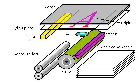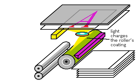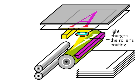When a document is placed in a copier, a bright light is bounced off the paper, through a lens, and onto a specially coated drum. The coating becomes electrostatically charged with a mirror image of the document.